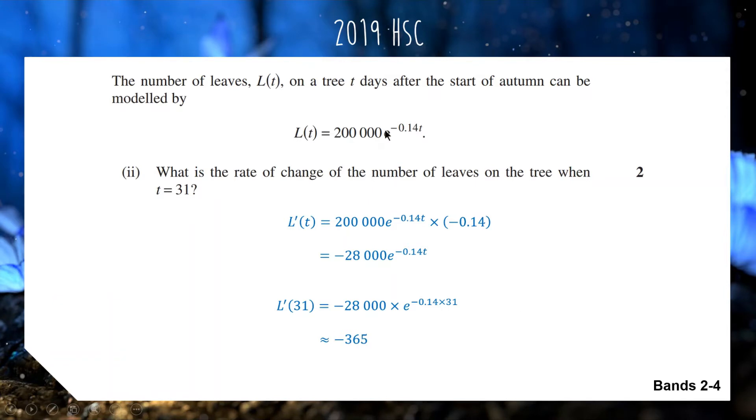When your rate is negative, it tells you that the quantity is decreasing, which makes sense because the number of leaves on a tree in autumn should decrease because they fall off. So negative 365 will get you the 2 mark full answer. If you want to be more thorough, you can say this means we are losing 365 leaves per day.